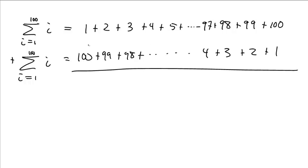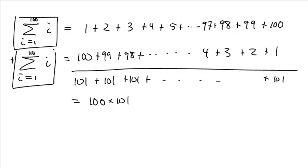And what would this be? This would be 101 plus 101 plus 101 plus 101. It would be 100 101's. So this would be 100 times 101. Now that is two of them added together. So one of them, sum i equals 1 up to 100 is going to be 100 times 101 divided by 2.